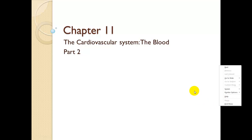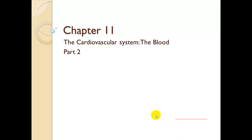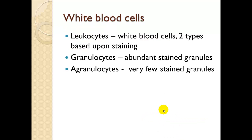This is part two of chapter 11, the cardiovascular system, focusing on the blood. In this section, we're going to talk about leukocytes and white blood cells. There are two types based upon staining. Most of these cells are translucent, so unless we stain them, we can't see them on a slide. There are granulocytes, which have abundant stained granules, and agranulocytes, which have very few stained granules.